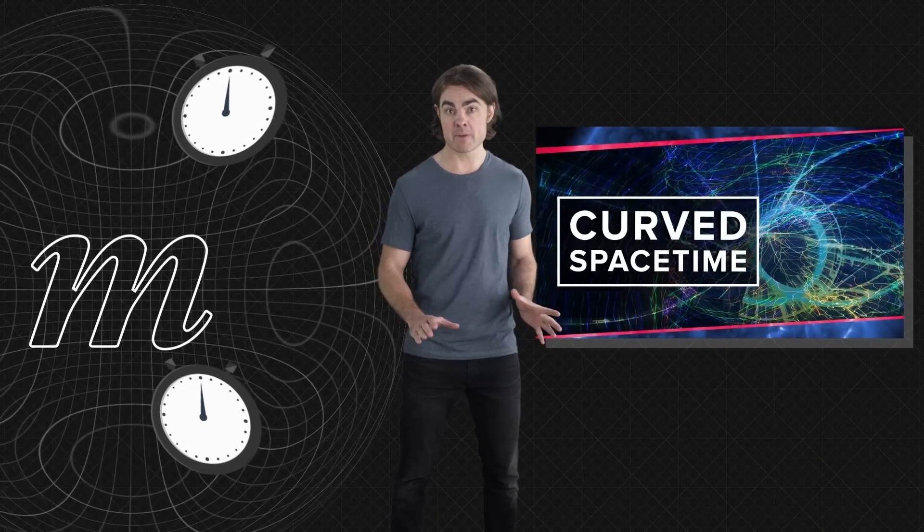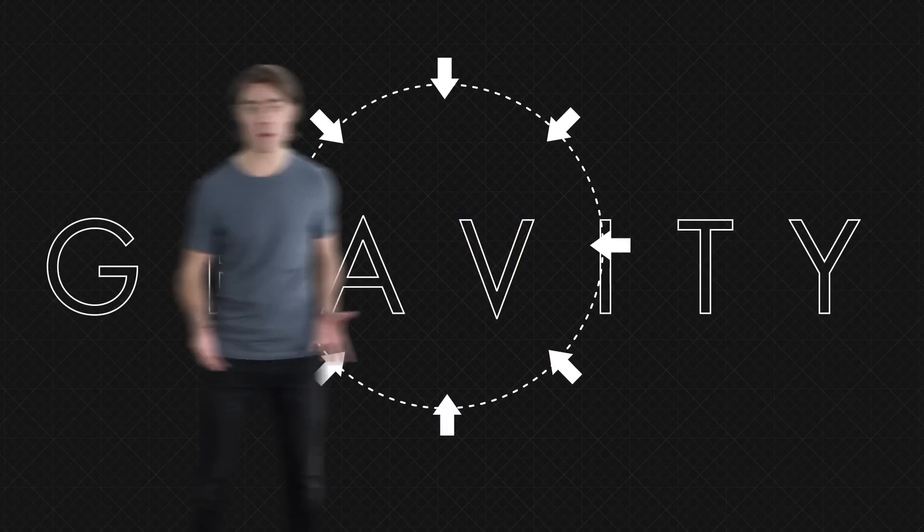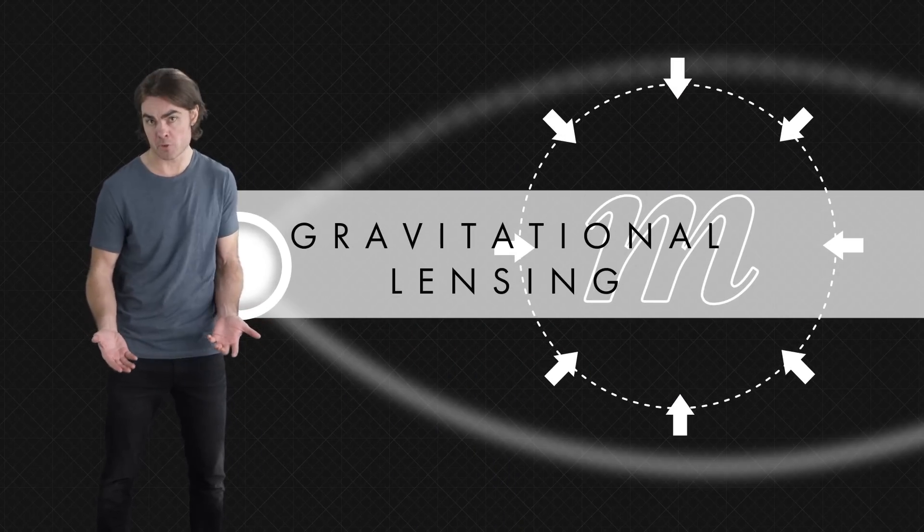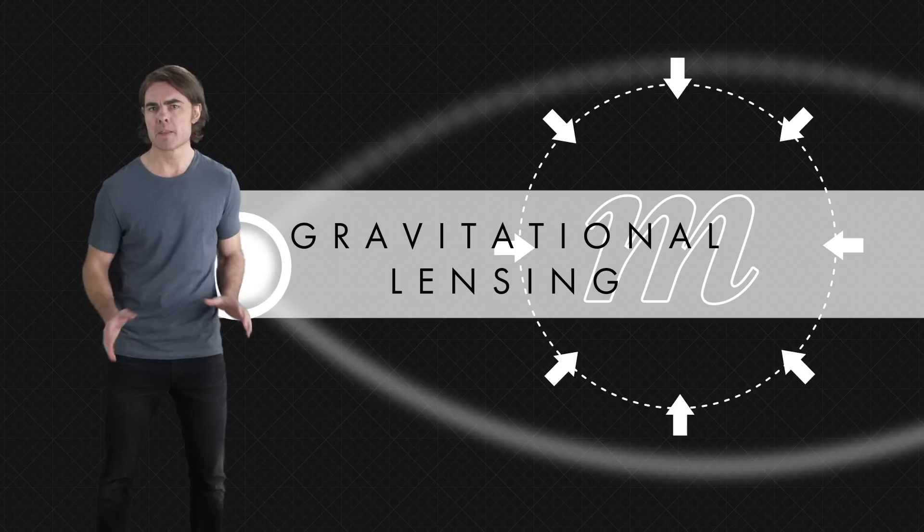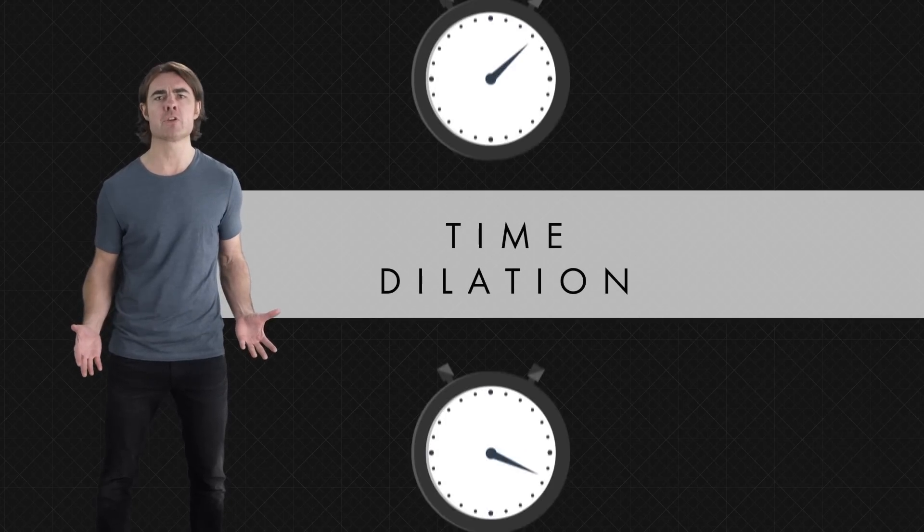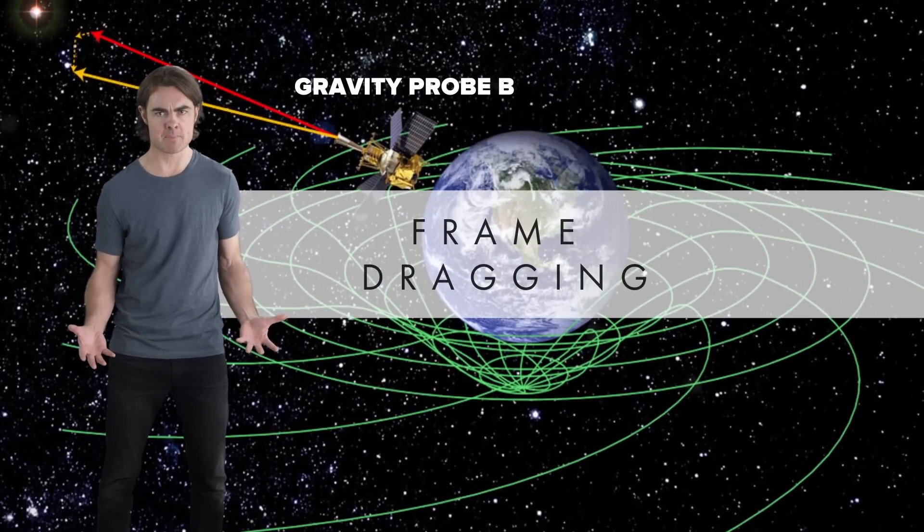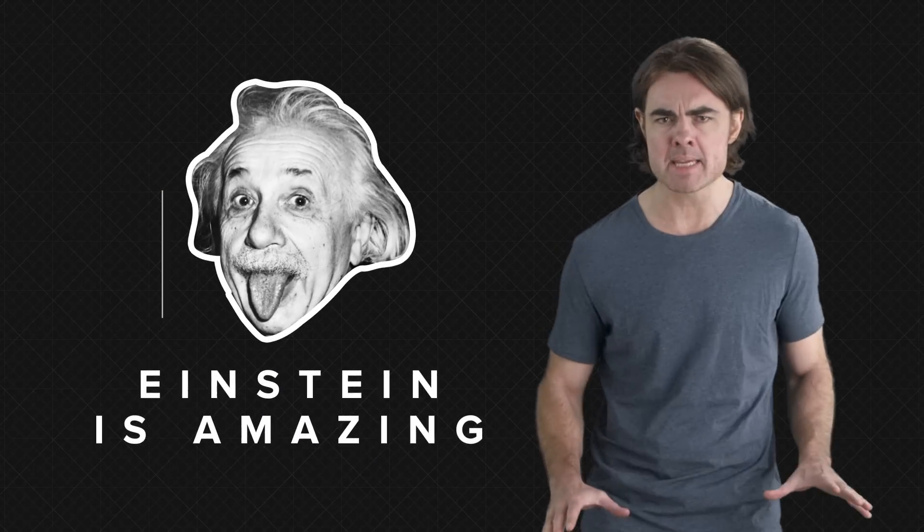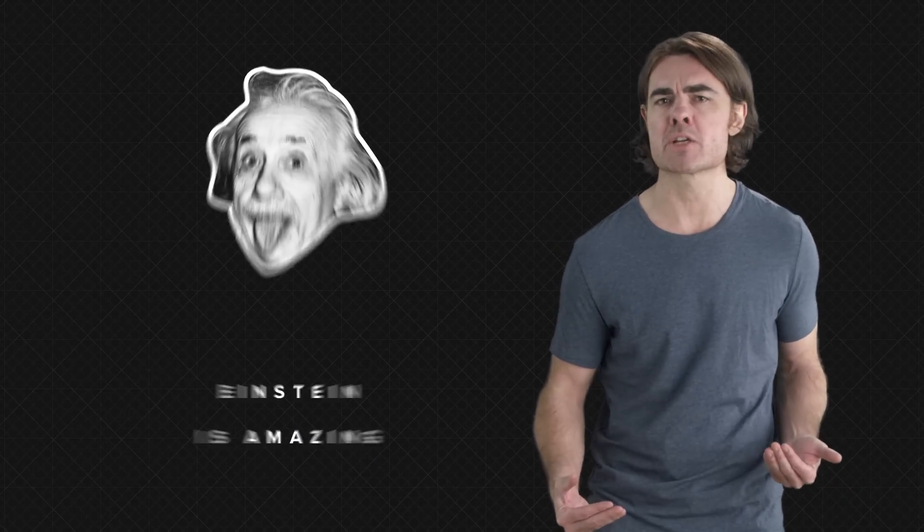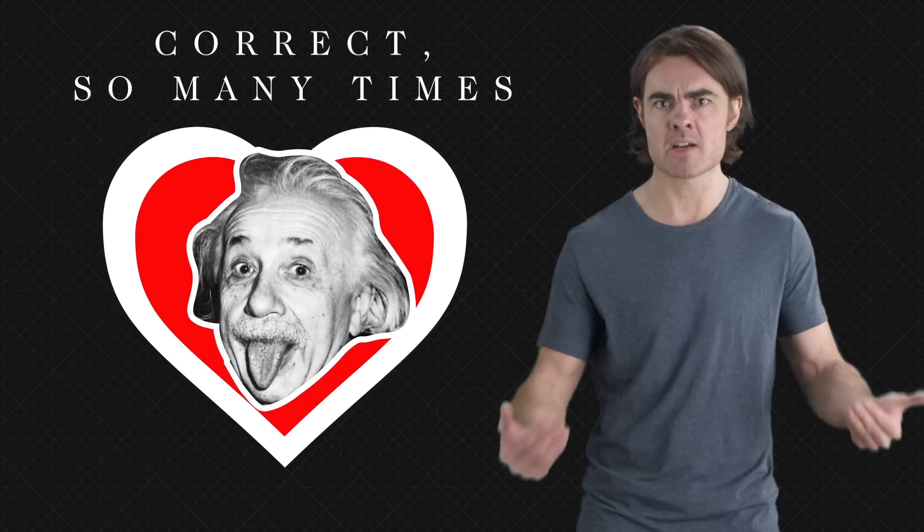It turns out that general relativity makes predictions far beyond the familiar gravity. There's the deflection of light that we see as gravitational lensing, the slowing of time in gravitational fields, and the dragging of spacetime by spinning masses. Einstein is amazing because every one of these predictions from his beautiful work have been physically tested and verified. We love Einstein because he's been proven right so many times.